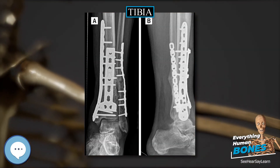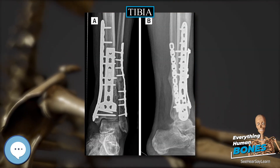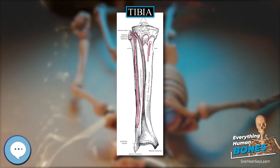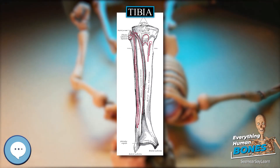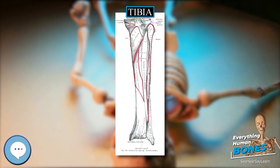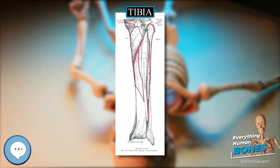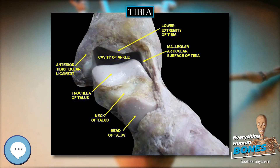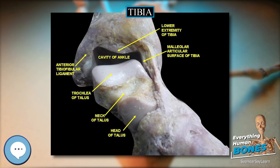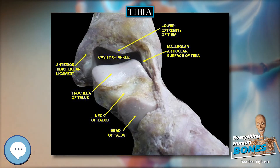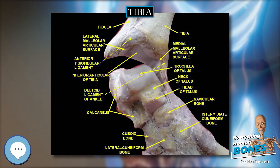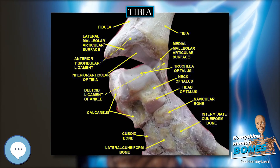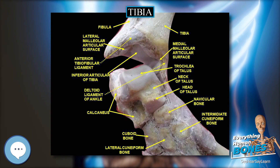The articulation between the tibia and the talus bears more weight than between the smaller fibula and the talus. Development. The tibia is ossified from three centers: a primary center for the diaphysis, or shaft, and a secondary center for each epiphysis, or extremity. Ossification begins in the center of the body, about the seventh week of fetal life, and gradually extends toward the extremities.